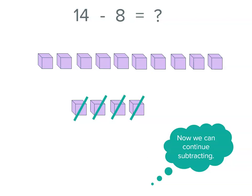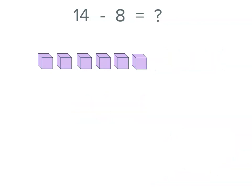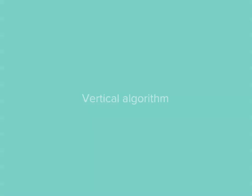Well, we've already subtracted 4, let's keep going, 5, 6, 7, 8. And you can see if we actually remove them as well, which is what you'll do if you're using blocks in real life, we've got 6 left. So 14 minus 8 equals 6. Now we're going to use that strategy in our vertical algorithm.